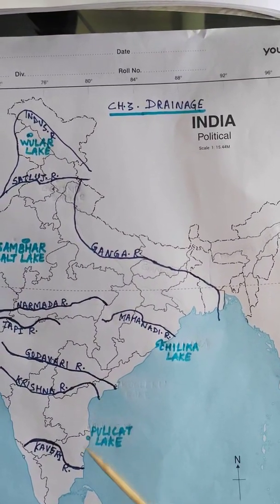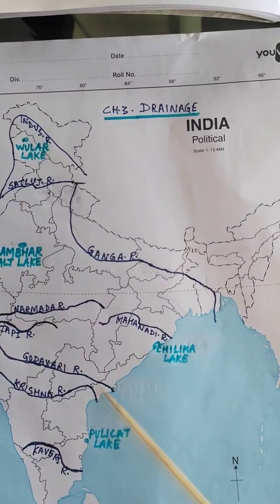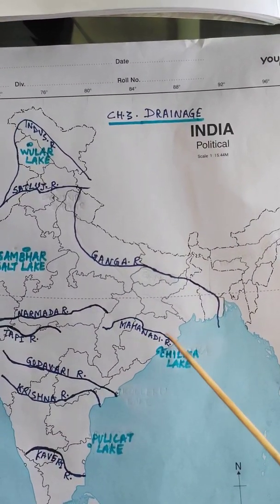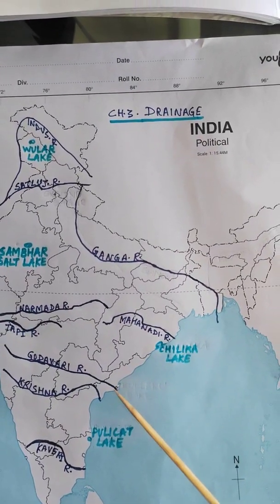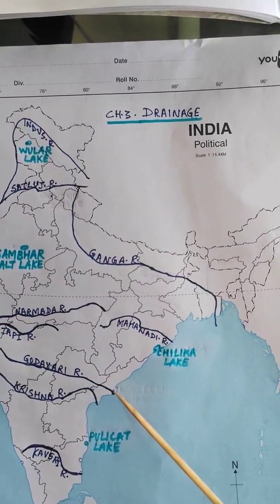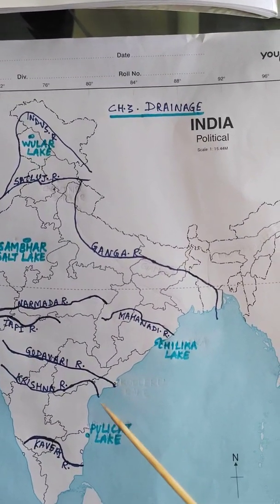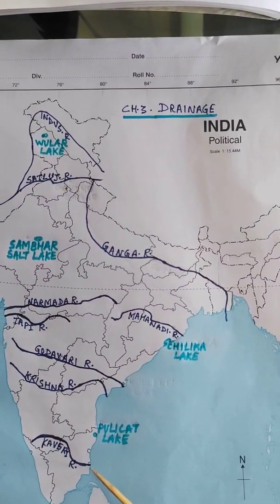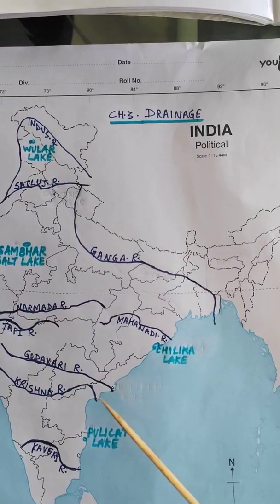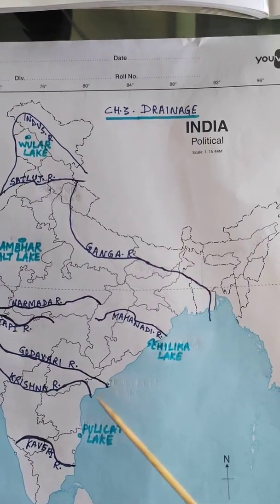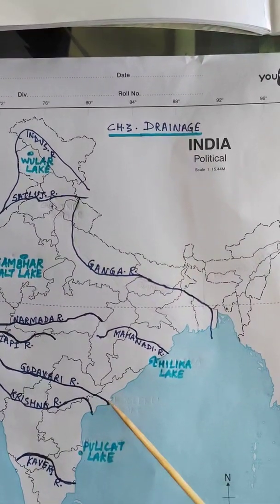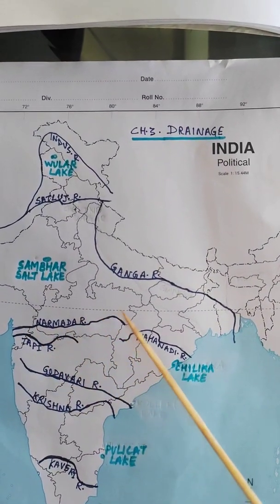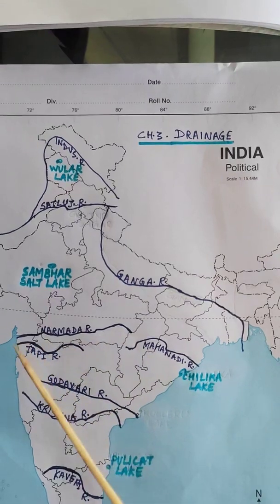If a delta is shown in Odisha, you understand it is Mahanadi. The northern delta is Godavari, the southern one is Krishna, and the southernmost is Kaveri — so it can be difficult to distinguish. Just remember the deltas formed by these rivers. Then you have Narmada — the longer river — and the shorter one is Tapti.